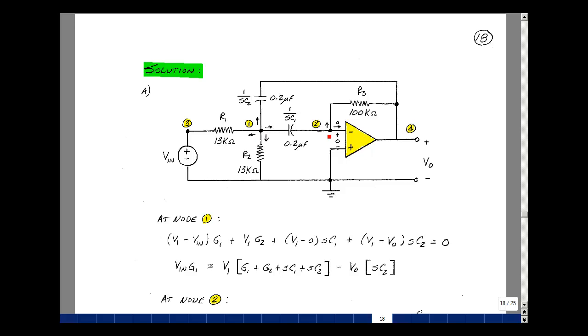I want to do that at nodes that don't have a voltage source connected to it, because at this node, the current in this voltage source is another unknown. And likewise, over here at node 4, the current in the voltage-controlled voltage source is also another unknown.